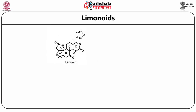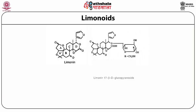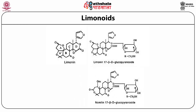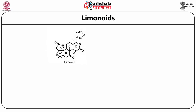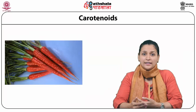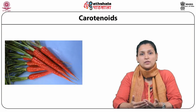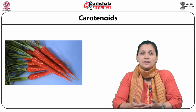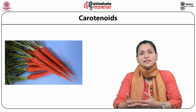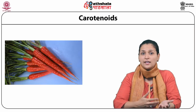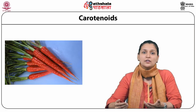Understanding the importance of limonoids, it is important for us to be able to utilize their benefits. Looking at the structure of two important limonoids — limonin and nominin — we observe the highly oxygenated ring structures of these molecules. On the right side of the image, we see the glycosylated forms which are equosoluble. The second class of important nutraceuticals are the carotenoids, which are further classified into carotenes and their oxygenated counterparts, the xanthophylls.